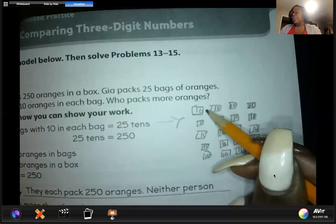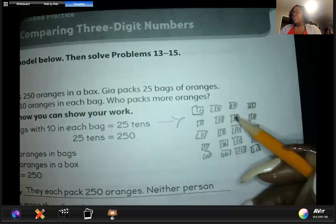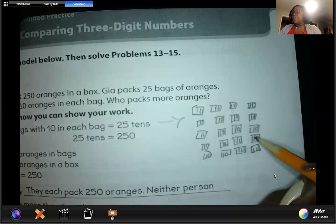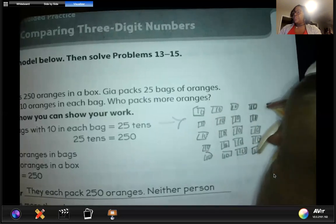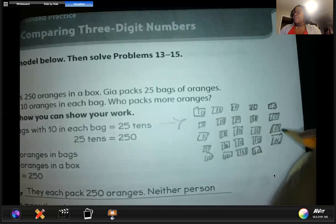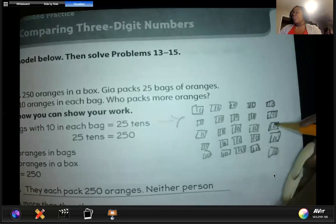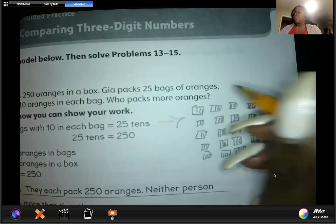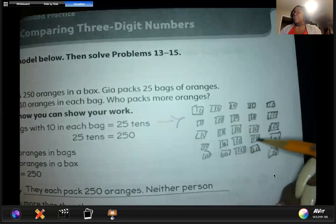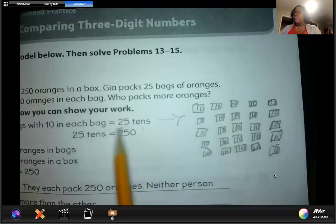Now we can just go down and count by 10s: 10, 20, 30, 40, 50, 60, 70, 80, 90, 100, 110, 120, 130, 140, 150, 160, 170, 180, 190, 200. Sorry, I'm missing some bags. 210, 220, 230, 240, 250. Let me check: 1, 2, 3, 4, 5, 6, 7, 8, 9, 10, 11, 12, 13, 14, 15, 16, 17, 18, 19, 20, 21, 22, 23, 24, 25. So 25 bags with 10 in them still gives us 250.